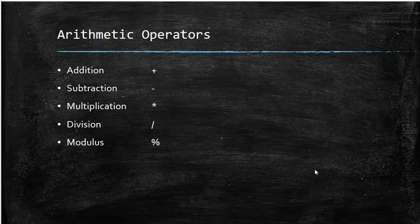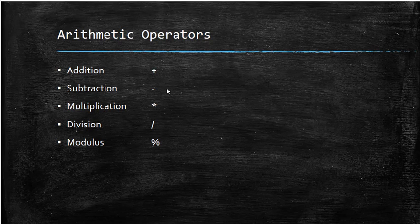Hi there, I'm Joseph Botnar. Welcome to another C++ video tutorial. In this video, I'm going to talk about arithmetic operators. What you can see on the screen: the plus sign is for addition, the minus for subtraction, the asterisk for multiplication, the backslash for division, and the percentage for modulo.